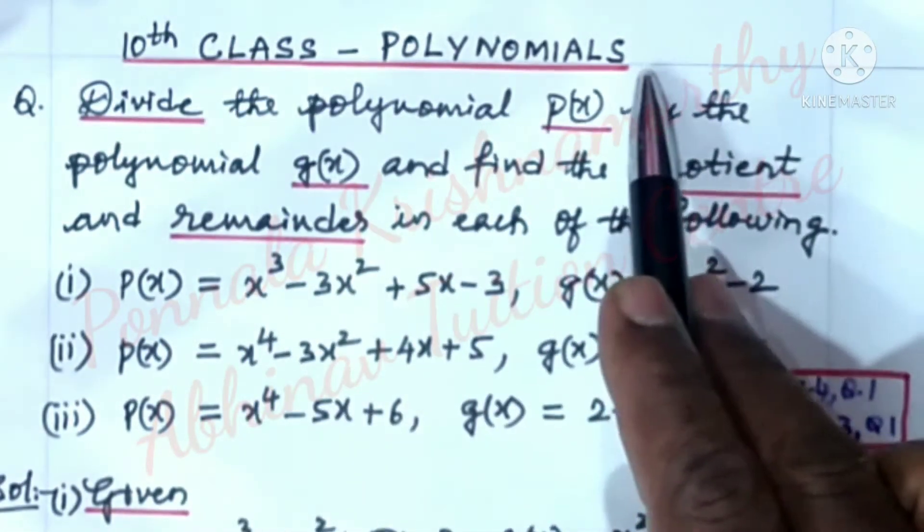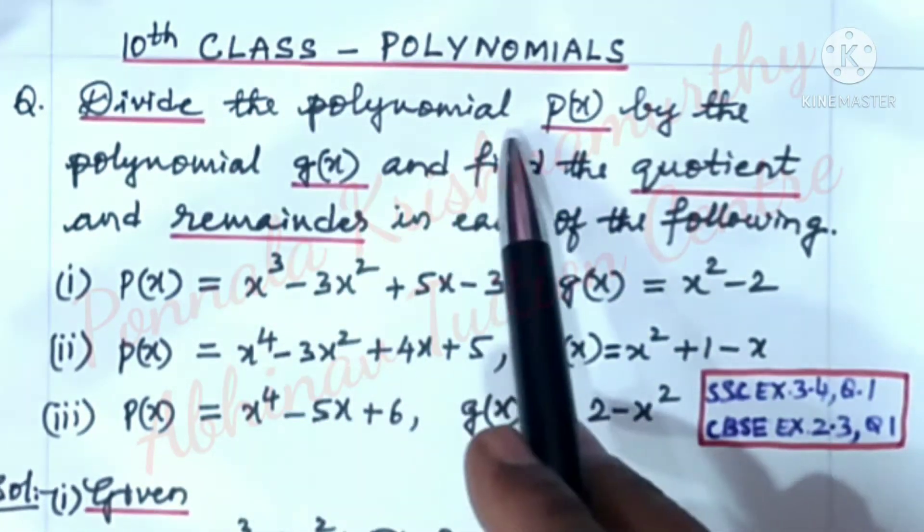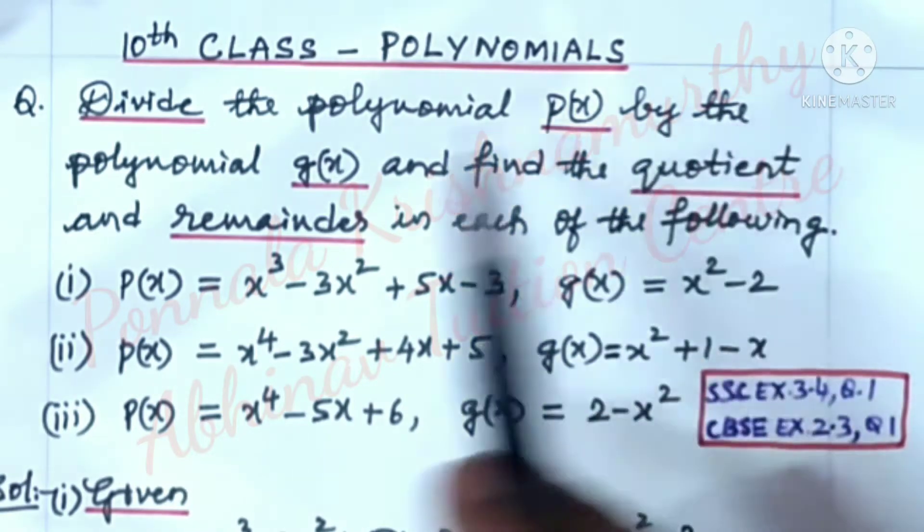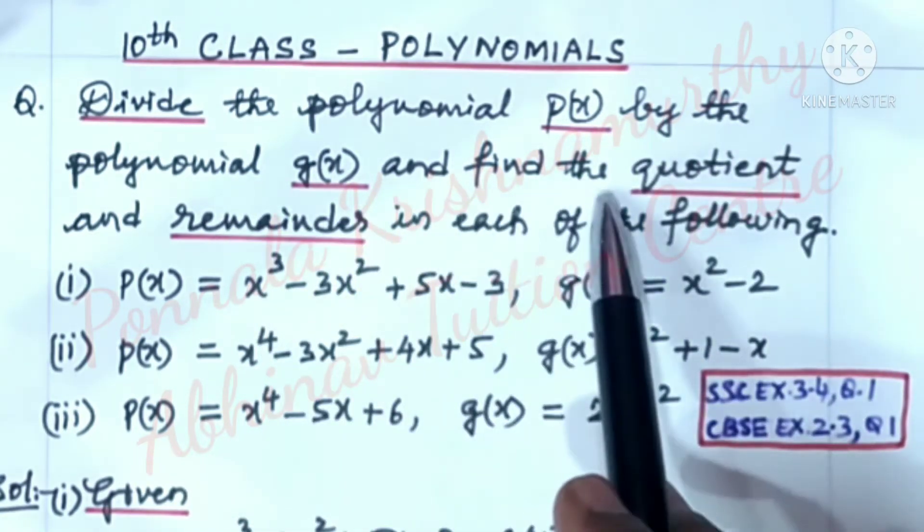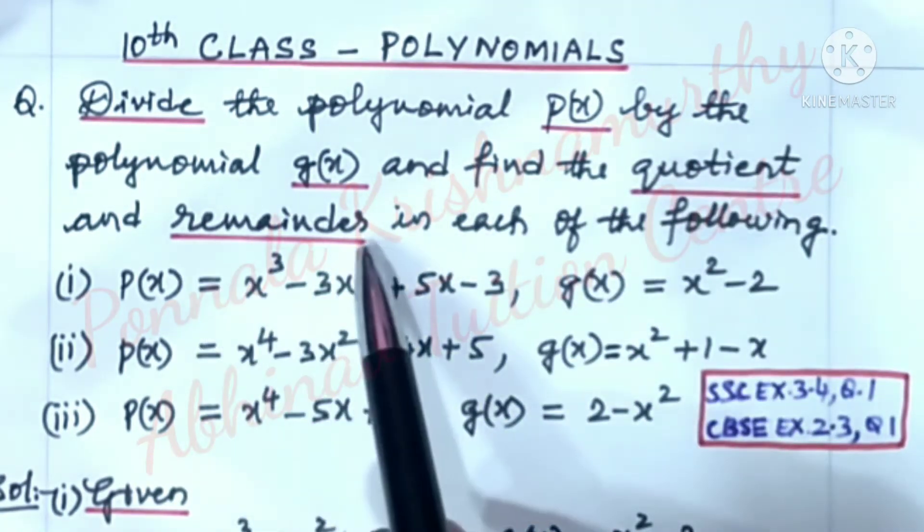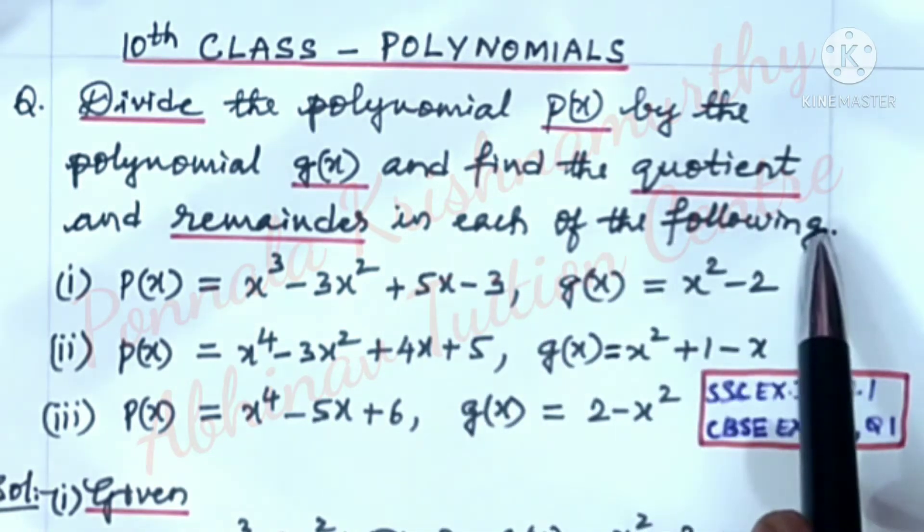10th class, Polynomials. Divide the polynomial p(x) by the polynomial g(x) and find the quotient and remainder in each of the following.